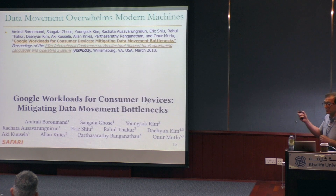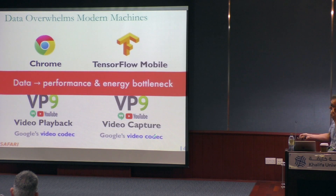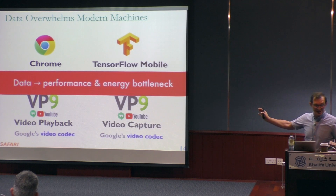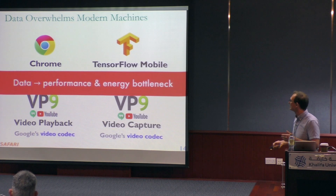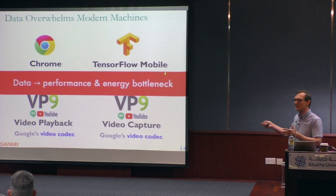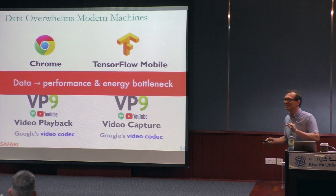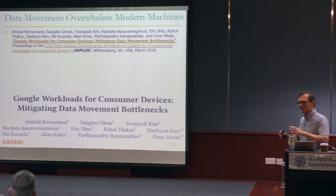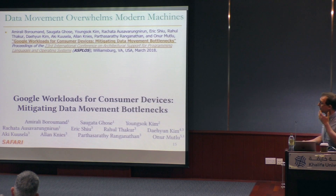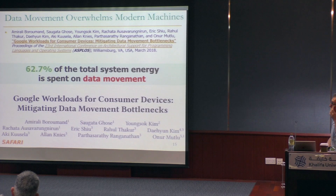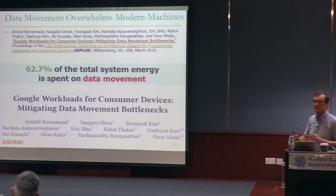Data overwhelms modern machines today. We examined these workloads together with Google over the course of one and a half years. These workloads have similar counterparts in mobile systems. We found out that more than 60% of the entire system energy is spent on data movement in these mobile devices running workloads that people really care about.